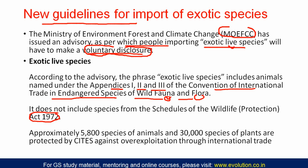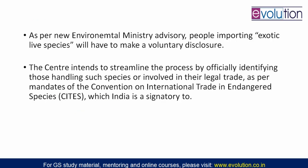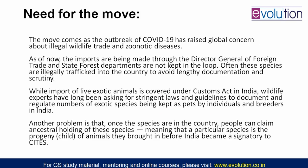Any species — plant or animal — included in Appendix I, II, or III of CITES, if imported in living condition, requires voluntary disclosure as per CITES rules and legal regulations as mandated by the Ministry of Environment, Forest and Climate Change. Currently CITES protects almost 5,800 species of animals and 30,000 species of plants in its list from international trade overexploitation.